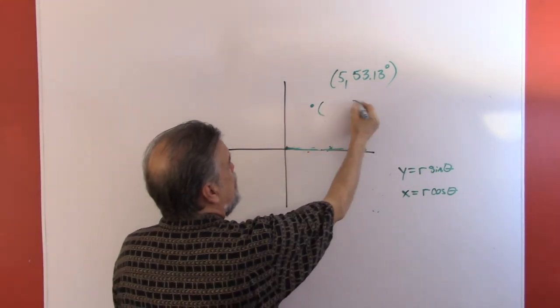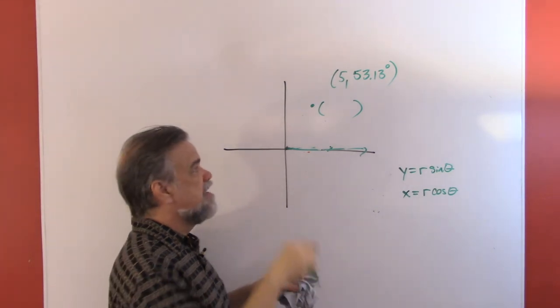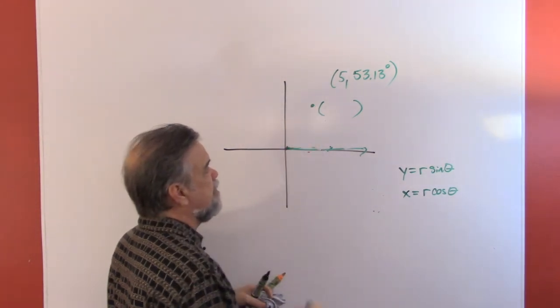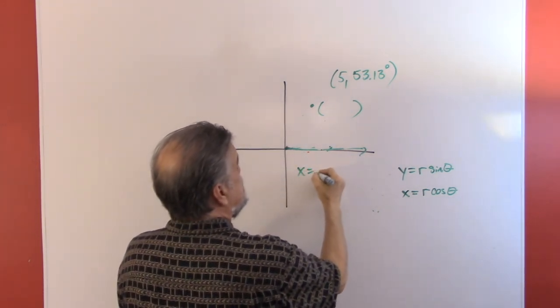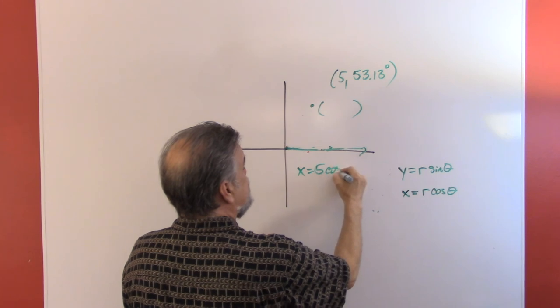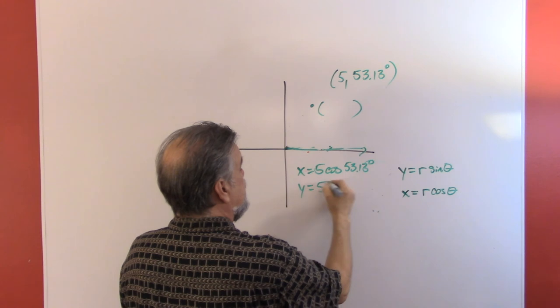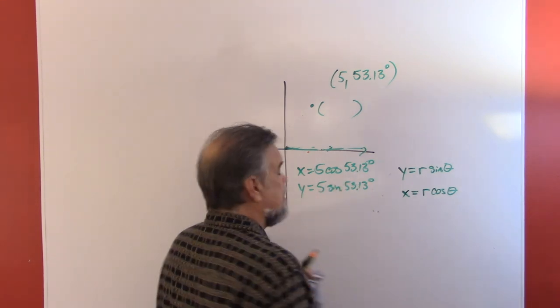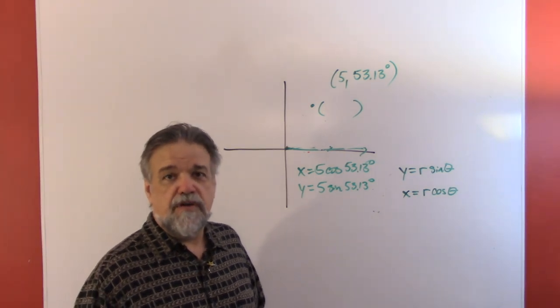I want to know what are my Cartesian coordinates—that is, what are my rectangular coordinates? How far over am I going, how far up am I going from the origin to get to that point right there? It's really easy. x is going to be 5 times the cosine of 53.13 degrees, and y is going to be 5 times the sine of 53.13 degrees.